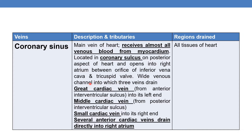Coronary sinus is a wide venous channel into which three veins drain: the great cardiac vein from the anterior interventricular sulcus into its left, the middle cardiac vein from the posterior ventricular sulcus, and the small cardiac vein into its right end. Several anterior cardiac veins drain directly into the right atrium.